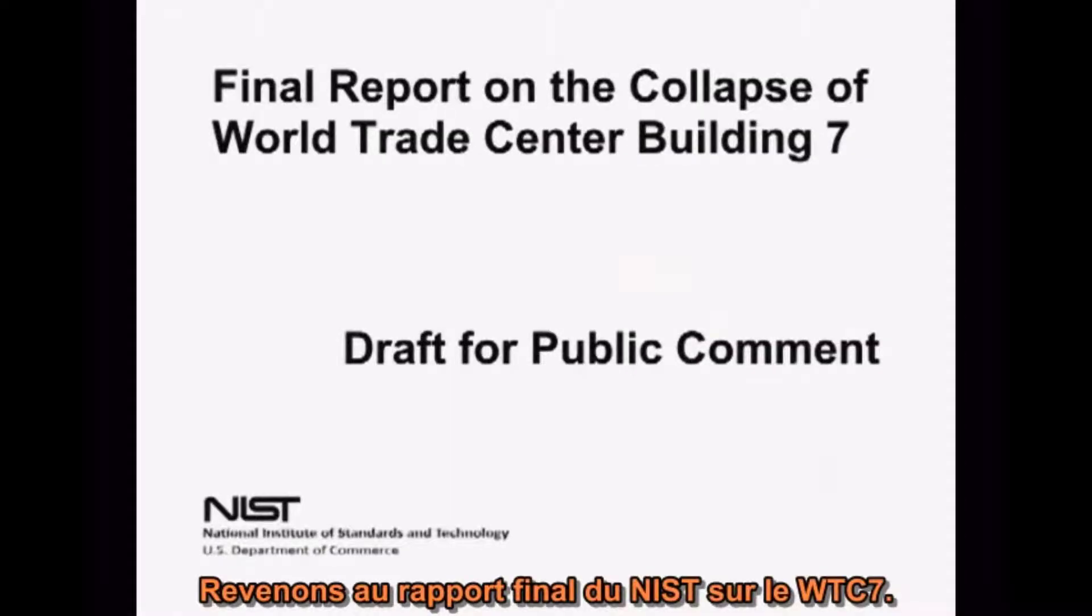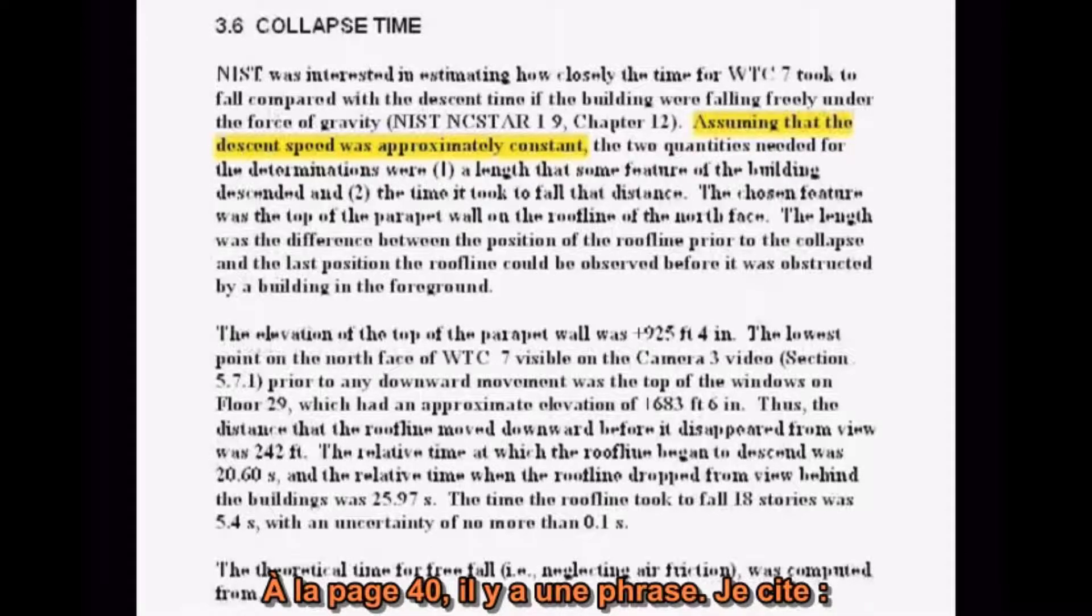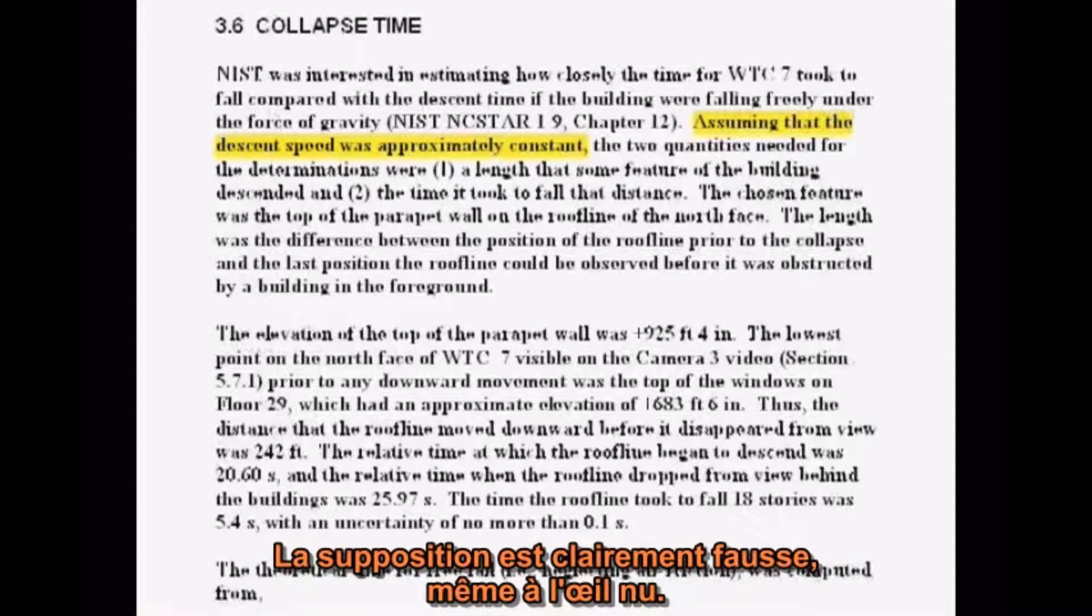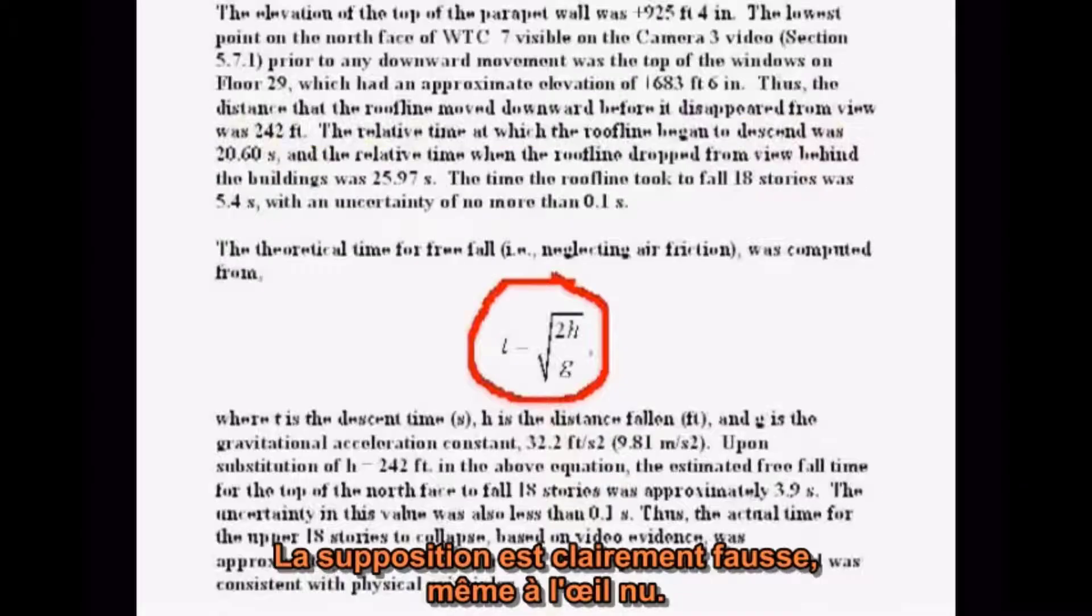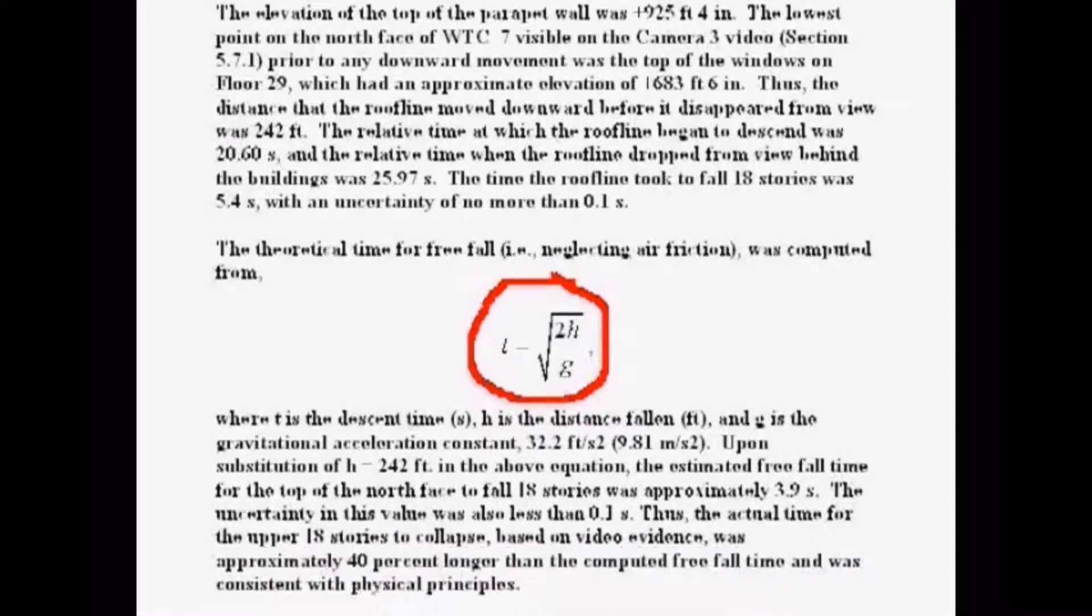Let's return to the NIST final report on WTC7. I would like to clarify one thing right away. On page 40, there is a phrase, quote, assuming that the descent speed was approximately constant, unquote. The assumption is clearly false from even casual observation. However, the fact that they proceed to use a formula for constant acceleration clearly indicates the constant speed reference is a misstatement. They're actually assuming constant acceleration.